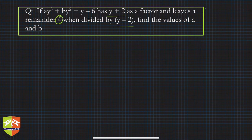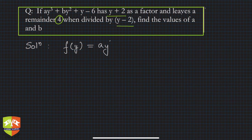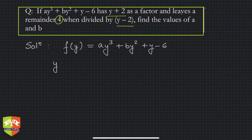This is a mix of both the remainder theorem and the factor theorem — both will be utilized here. So let us define f(y) as the polynomial: f(y) = ay³ + by² + y − 6.